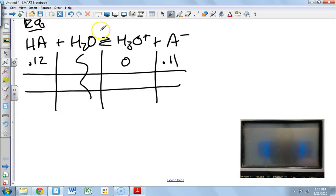Now remember it shifts this way, so this is minus x plus x plus x. And so we do 0.12 minus x, we do x, and we do 0.11 plus x.